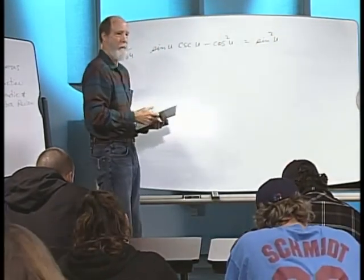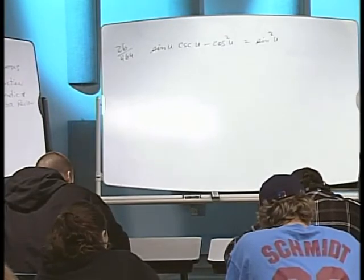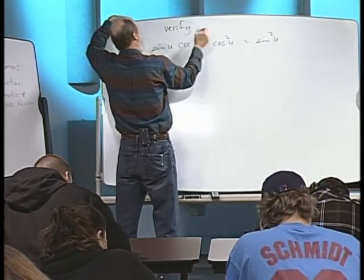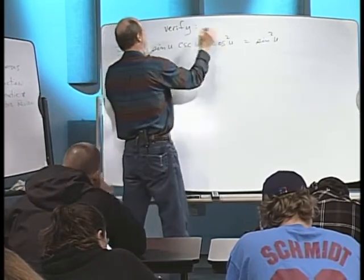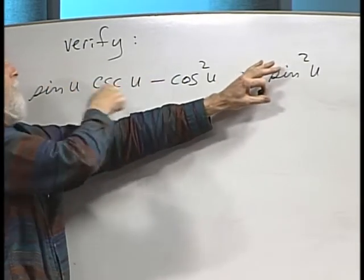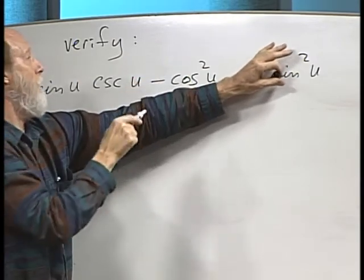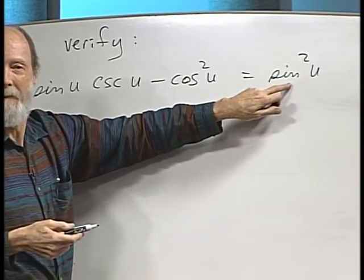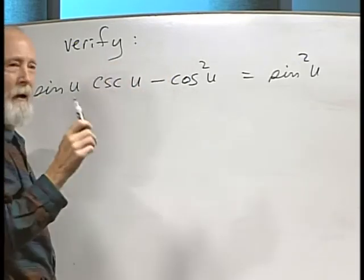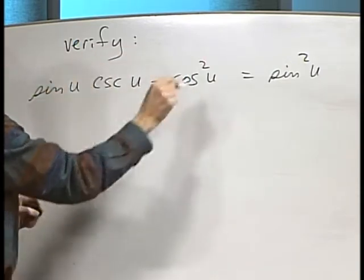So this is called an identity. This is a true statement, and we need to verify the identity. I think you can see that if you came up with a big messy looking expression like this, wouldn't it be a lot nicer rather than writing that mess out to simply be able to say, hey, that thing is just sine squared of u. That's one of the main reasons we want to know how to verify identities.